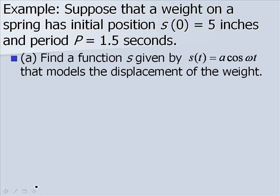First thing we want to do is find a function S given by S of t equaling A cosine of omega t that models the displacement of the weight. So we know that our initial position is 5, and this is where we've pulled the weight down. So this is equal to our amplitude, which is equal to A in our equation.